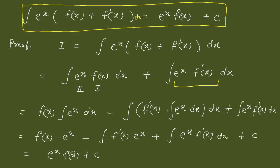Using integration by parts on the first integral, f(x) is taken as the first function. This gives f(x)·e^x minus the integral of f'(x)·e^x. The integration of e^x is e^x itself. You can see that the term involving the integral of e^x·f'(x) cancels with the second integral, leaving us with e^x·f(x) + C. This proves the special result.